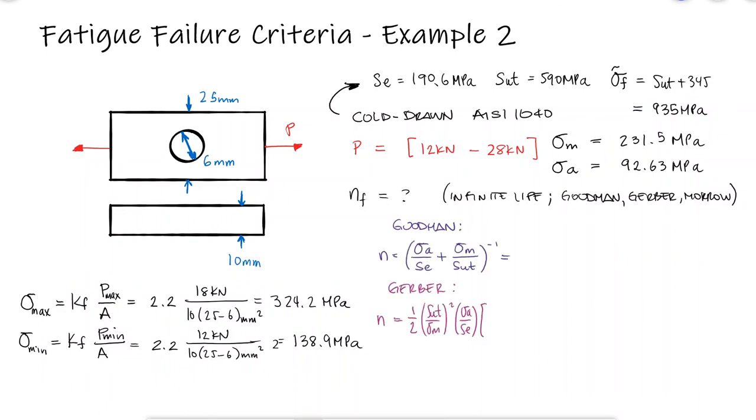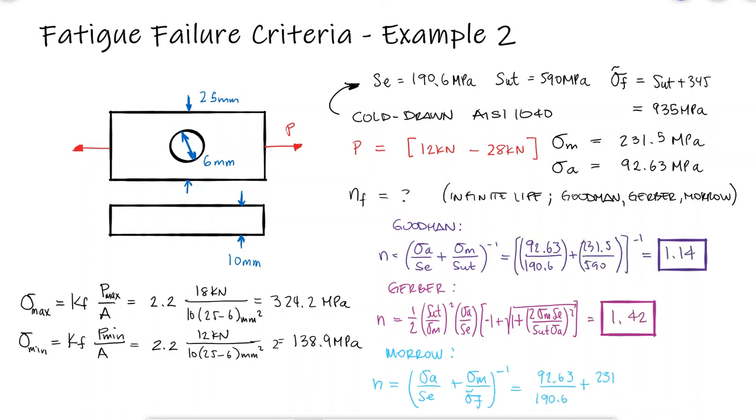The factors of safety are therefore 1.14 for Goodman, 1.42 for Gerber, and 1.36 for Murrow.